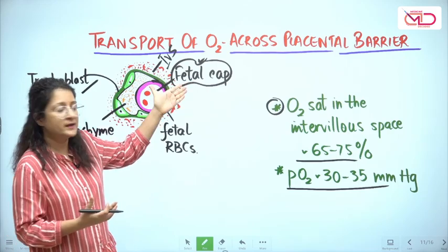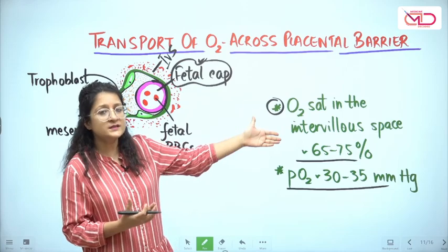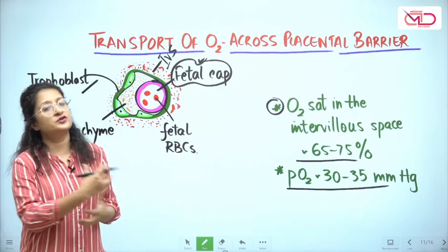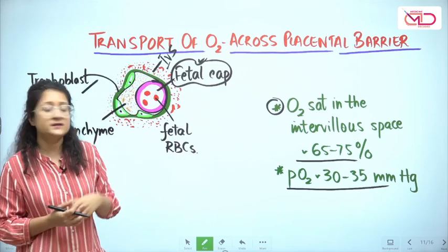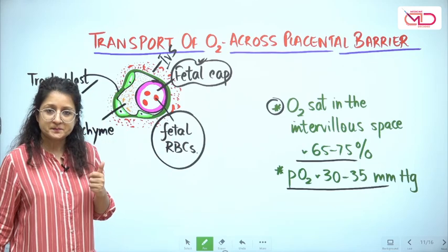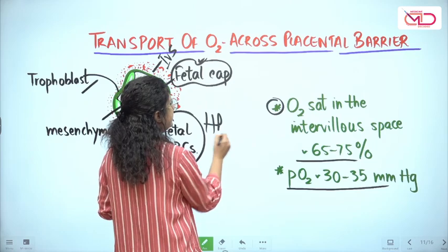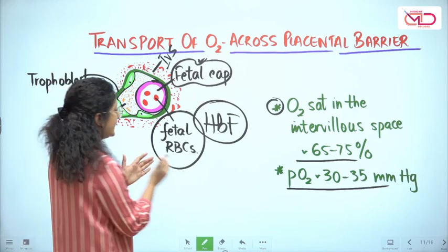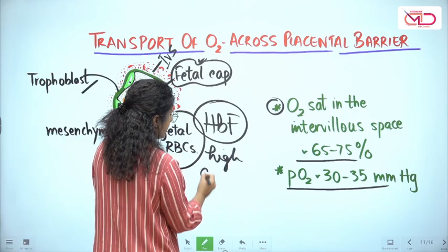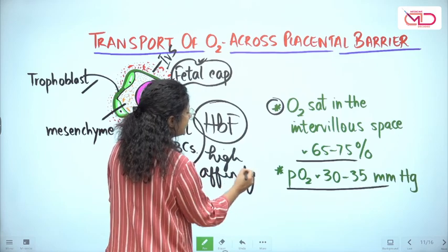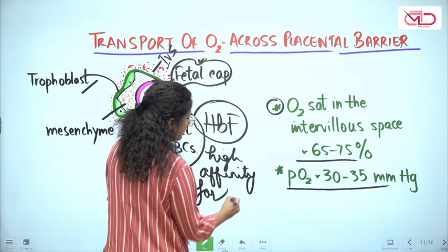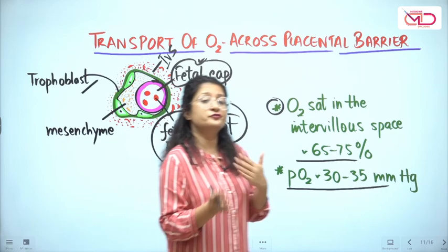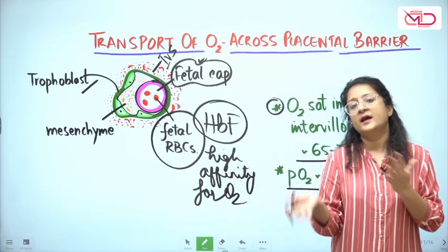The answer lies in the fetal red blood cells. The fetal RBCs contain hemoglobin F — the fetal form of hemoglobin — which has a high affinity for oxygen, binding to it more tightly. This high affinity promotes the transfer of oxygen from the maternal blood to the fetal blood, enabling effective gaseous exchange despite the similar partial pressures.